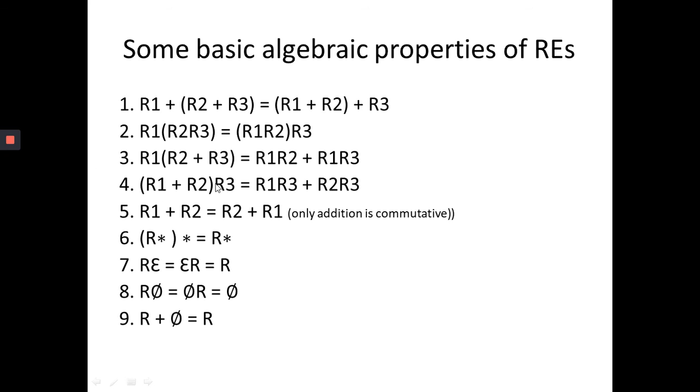Then, (R1 plus R2)R3, then it is R1R3 or R2R3. The same way, the union part is covered. Then, R1 or R2 is same as R2 or R1. You can swap the order of it. Then, R closure closure is same as R closure. The same regular expression remains.